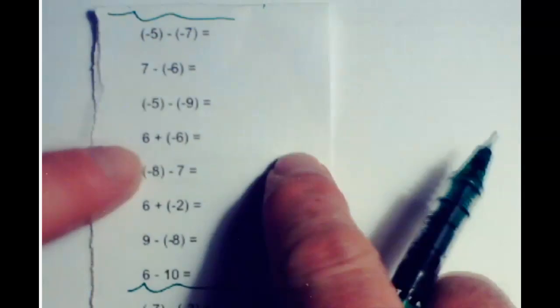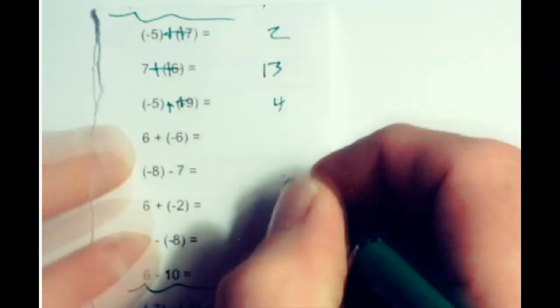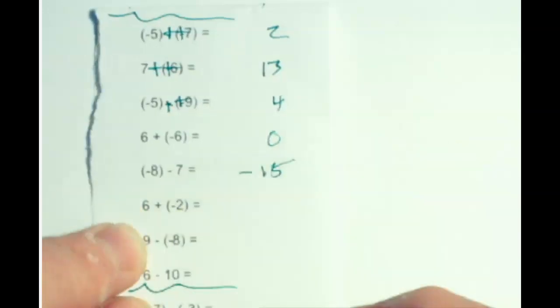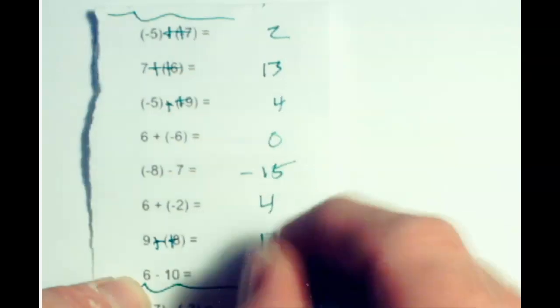This is a double shot, so now you have different signs — the difference is 2 and it's positive. These are the same signs because that's a double shot — 7 and 6 is 13. This is a double shot, now you have different signs — the difference is 4 and it's positive. These are different signs — the difference is 0. These are same signs — add them up, it's negative 15 because they're both negative. These are different signs — the difference is 4 and it is positive. This is a double shot — these are the same signs, add them up, it's 17 and it's positive. These are different signs — the difference is 4 and it's negative 4.